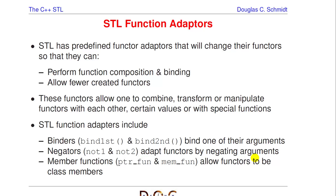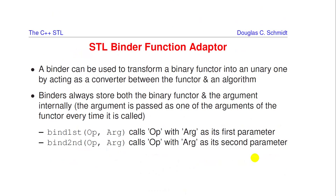Function adapters have several purposes: function composition and binding via binders and negators, and adapting things that are not C++ functor objects — like pointers to member functions or raw function pointers — to work in contexts where functors are expected.